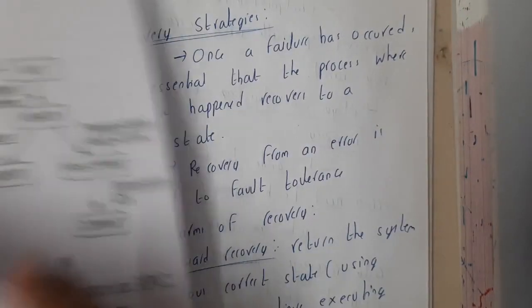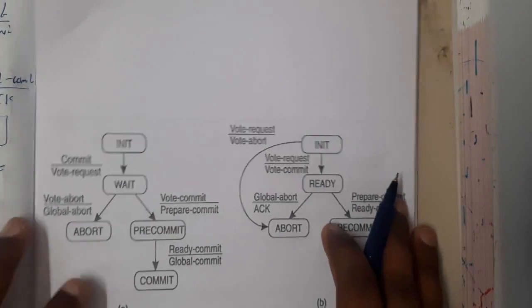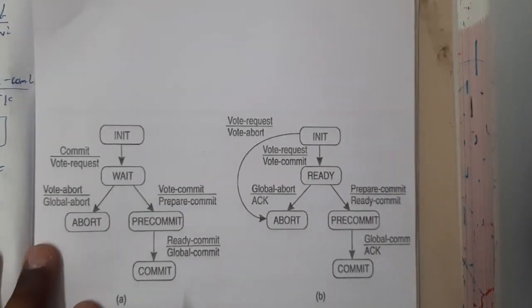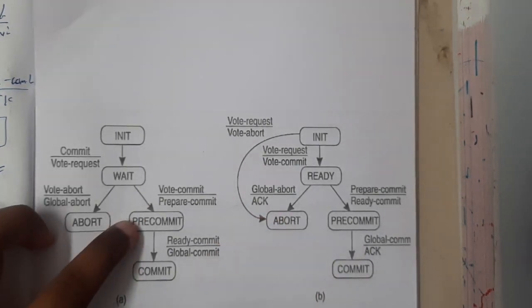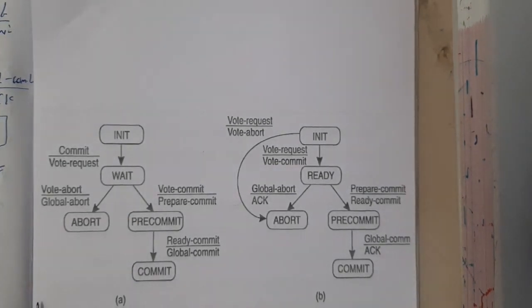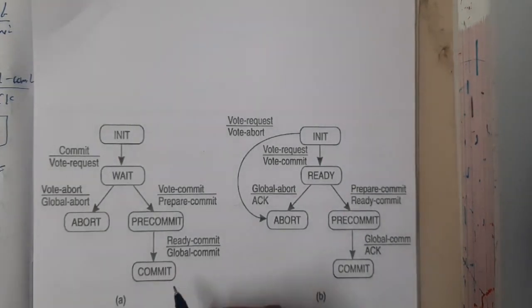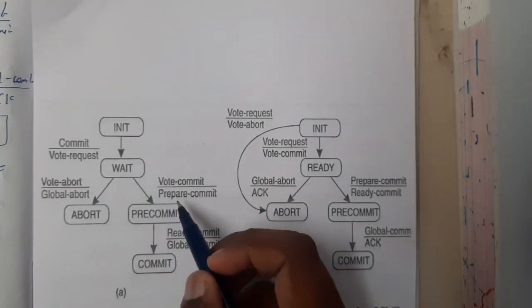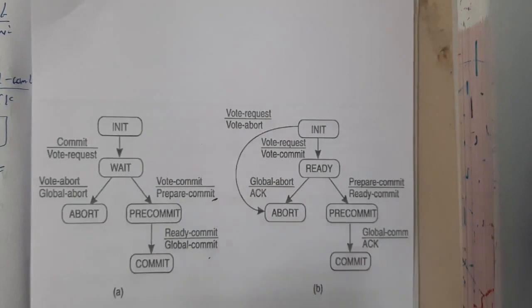The flow charts are almost the same as two-phase commit. Basically, before commit, we have added just one more phase — that is pre-commit. So if everyone is ready for pre-commit, then we do the commit. Once everyone says they are ready to commit, we do a pre-commit, and after pre-commit is successful, we do the final commit. That is the only difference.